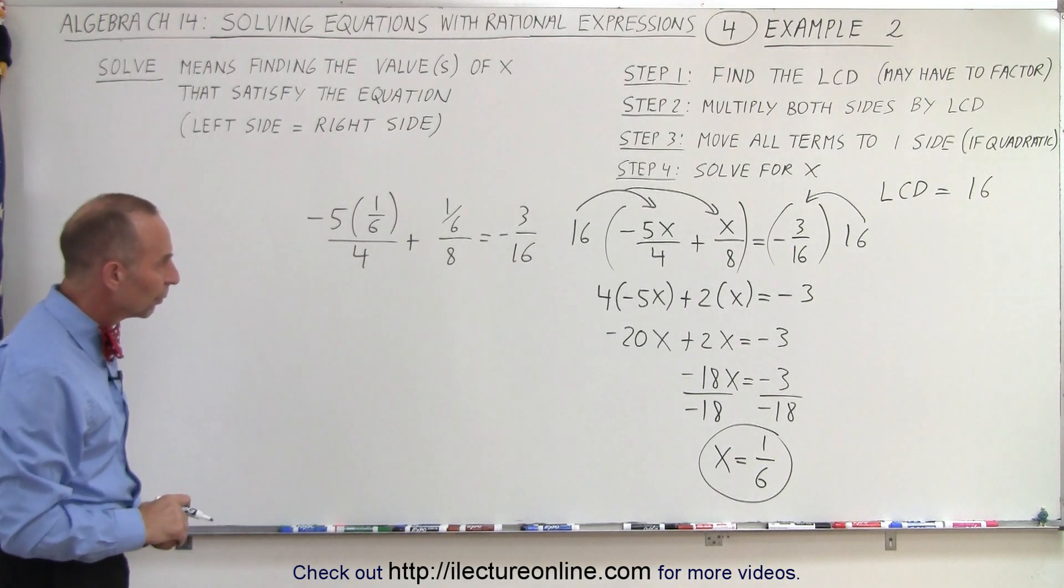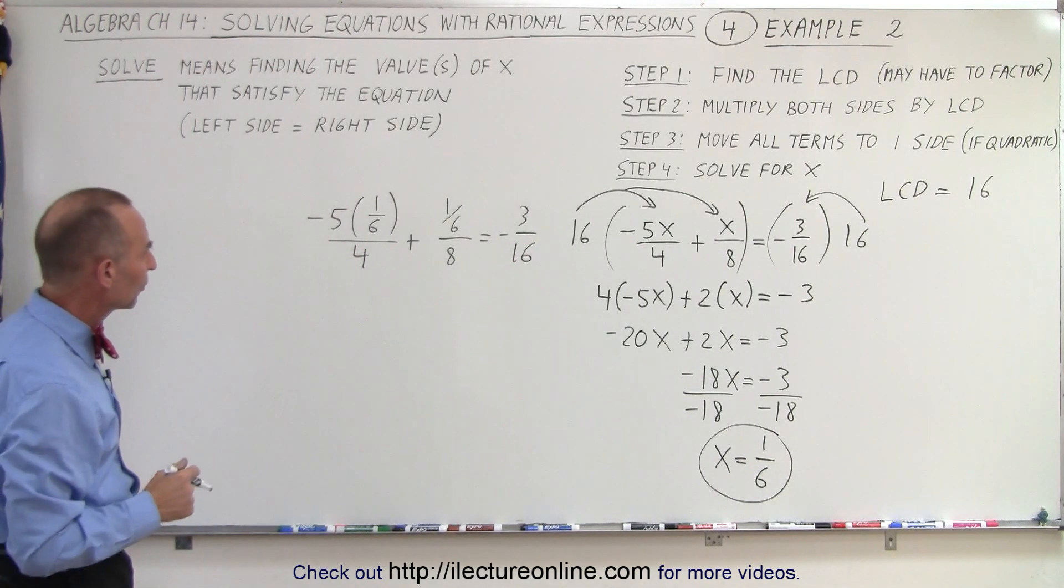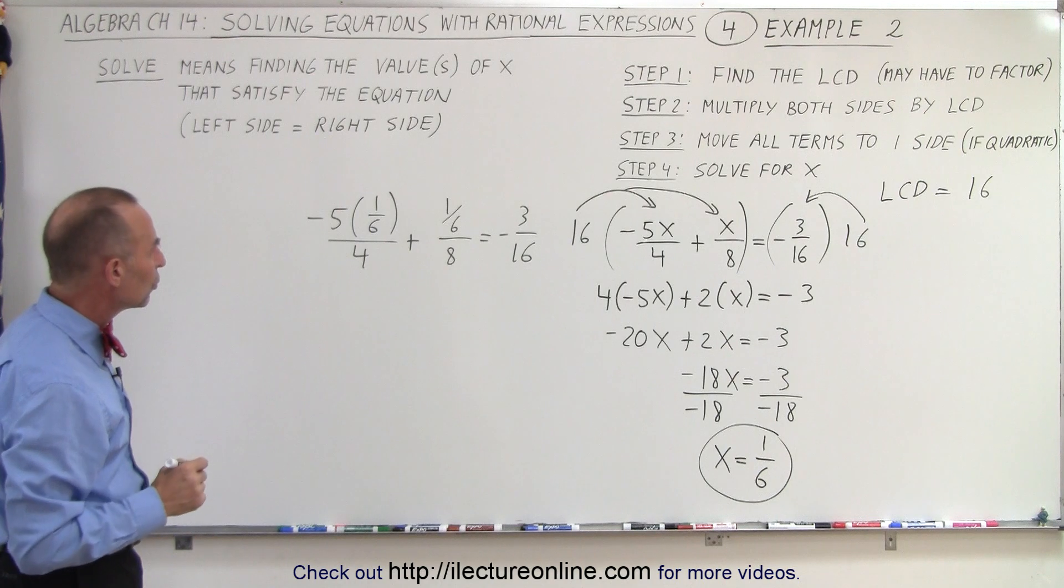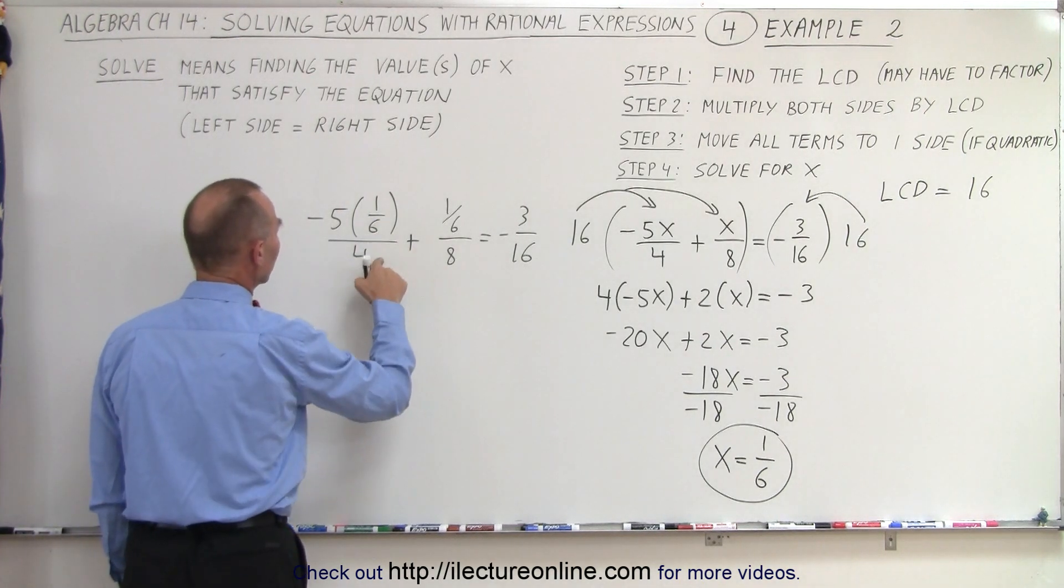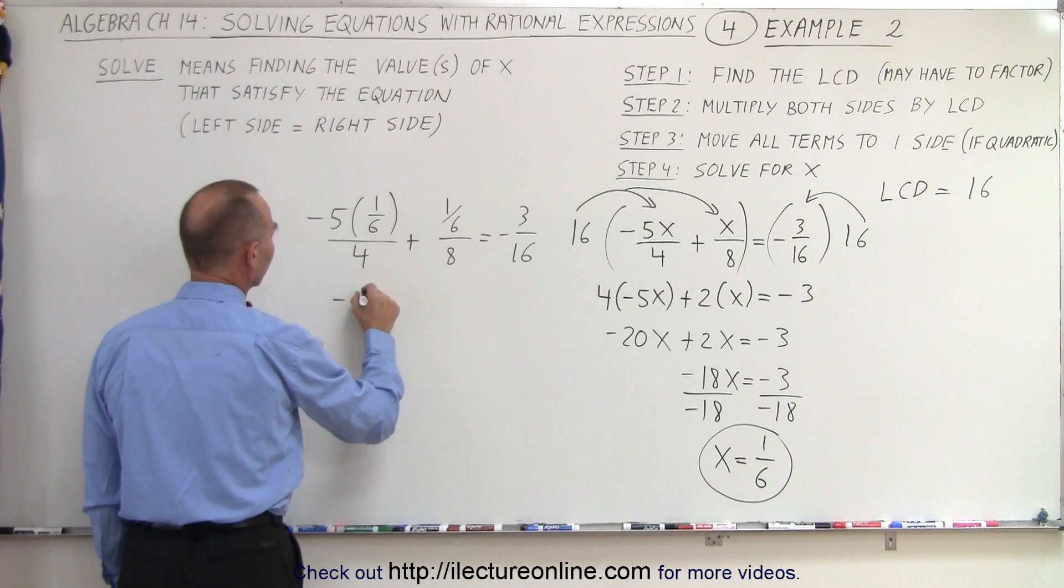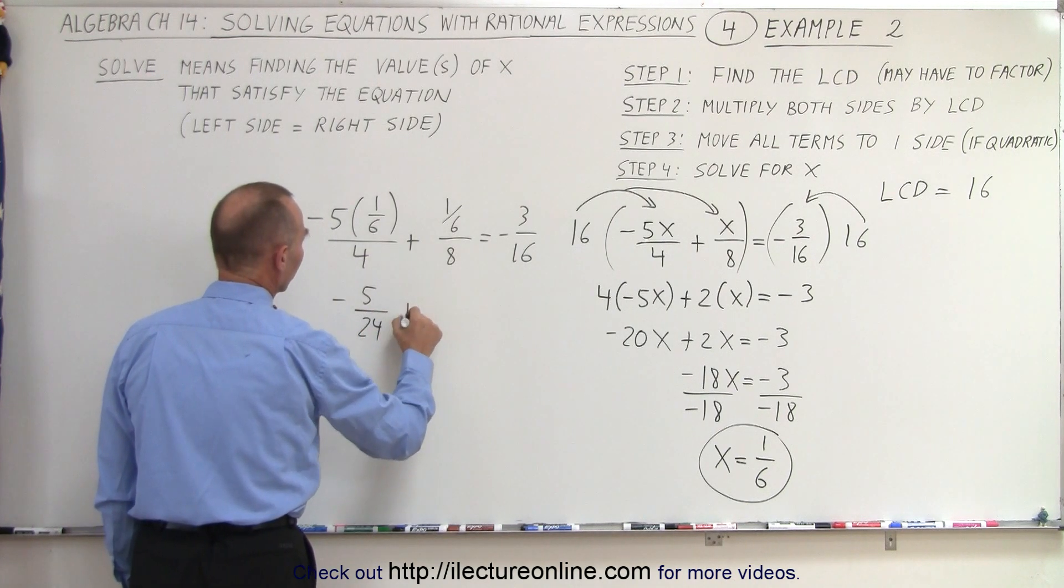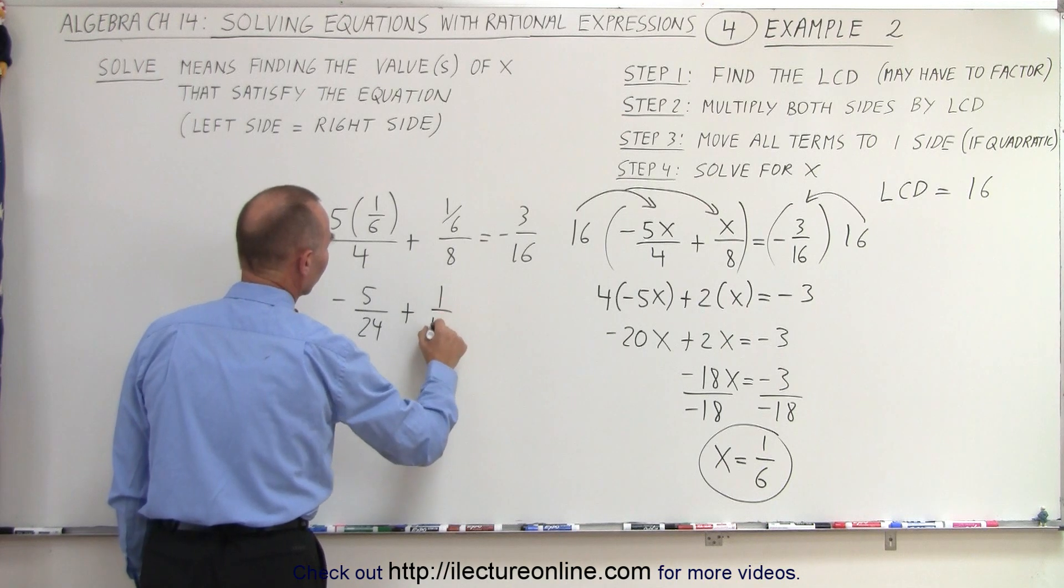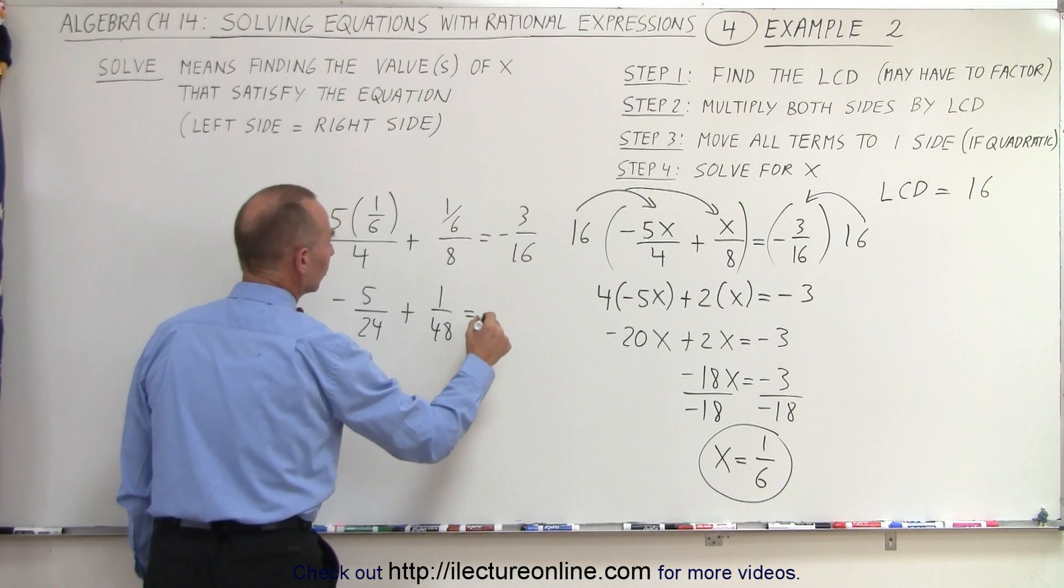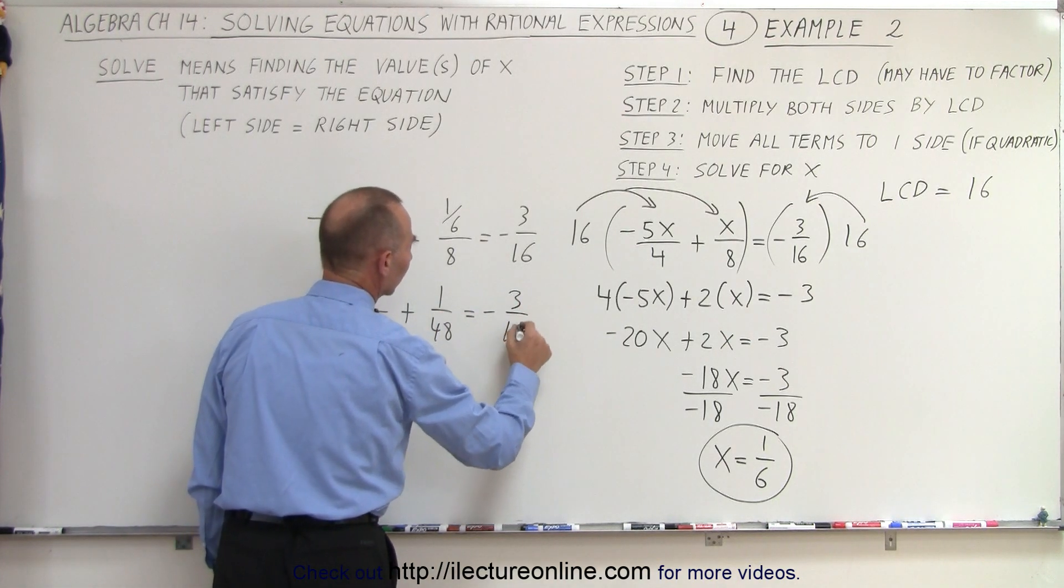All right, what should we do now to work that out? Well, what we could do is the following. We could move the 6 of the denominator and write as minus 5 over 6 times 4, which is 24, plus 1 over 48 is equal to minus 3 over 16.